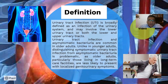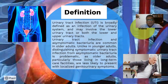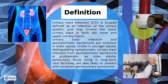Urinary tract infection and asymptomatic bacteriuria are common in older adults. Unlike in younger adults, distinguishing symptomatic urinary tract infection from asymptomatic bacteriuria is problematic. Older adults, particularly those living in long-term care facilities, are less likely to present with localized genitourinary symptoms.